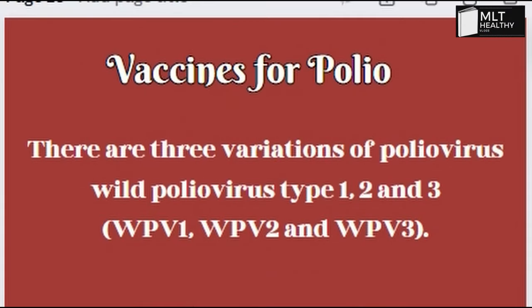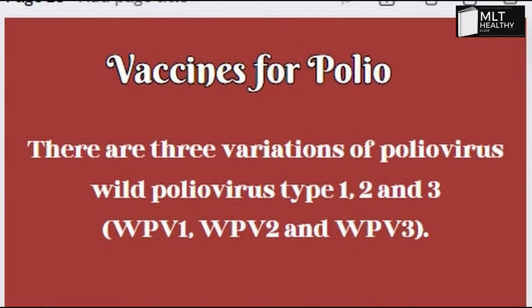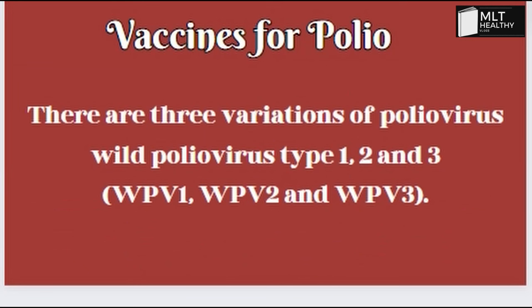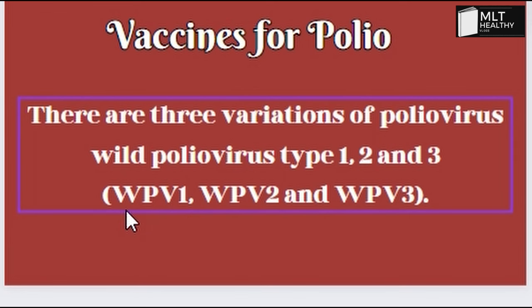Next, polio vaccines. In polio vaccines, there are 3 variations — 3 different polio viruses. We can identify wild polio virus type 1 (WPV1), wild polio virus type 2 (WPV2), and wild polio virus type 3 (WPV3).